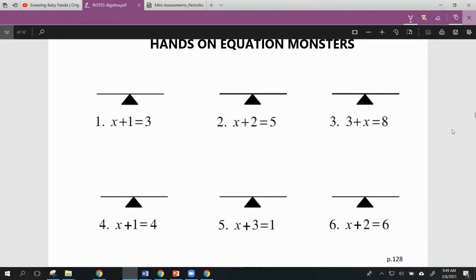For our variable x, I'm going to draw a little ghost monster. Okay, there's my little ghost monster. And for the one, I'm just going to draw a box. Okay, for my three over here, I'm going to draw three boxes. Okay, so we can see that we have x plus one on one side of our equal sign, on one side of our balance, is equal to three boxes. So our goal is to figure out how much just our ghost weighs. How many boxes is our ghost worth?